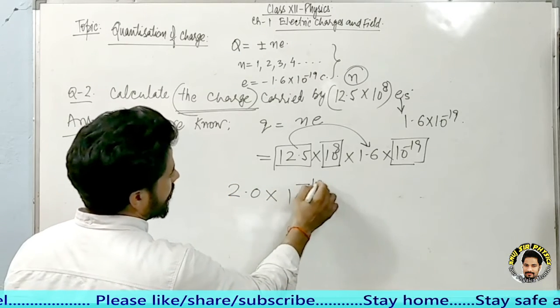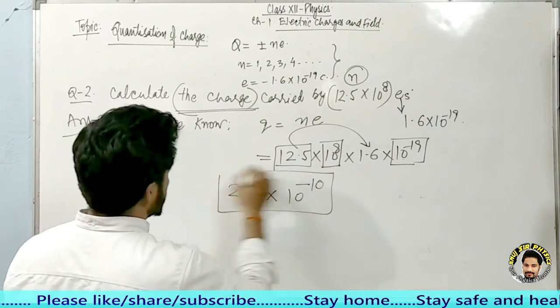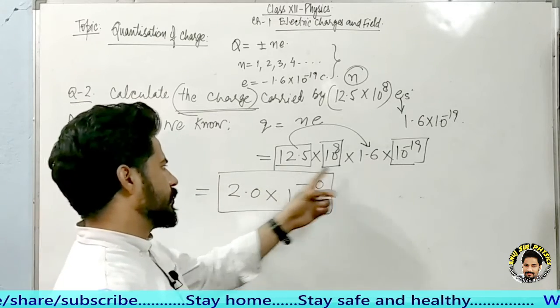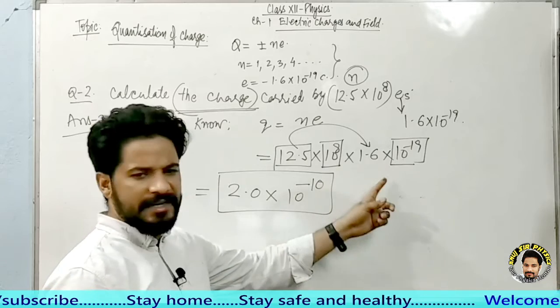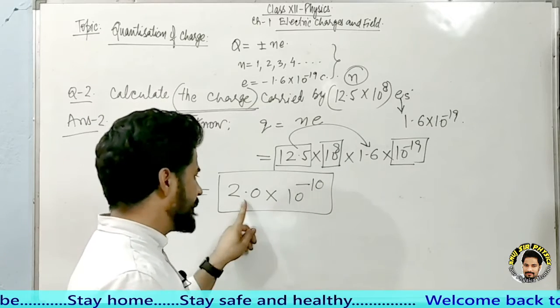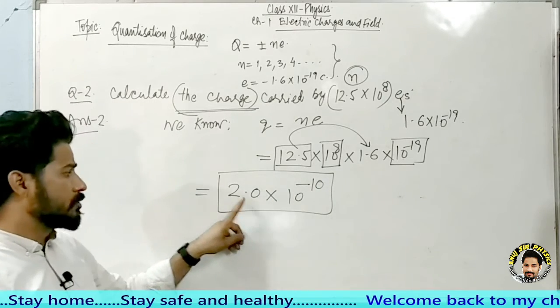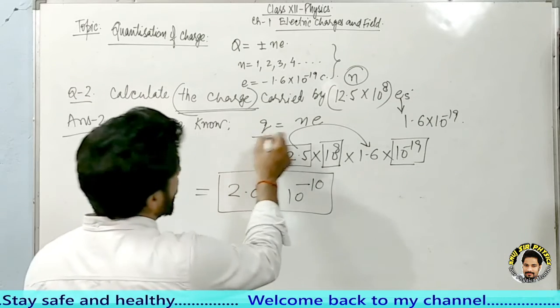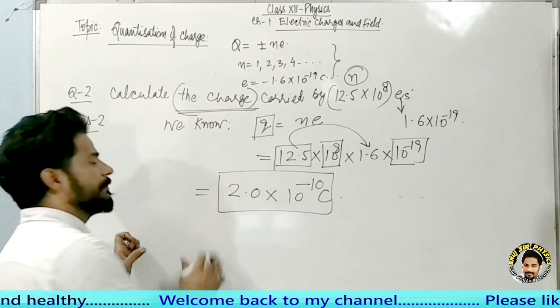into 10 to the power minus 10 coulombs. Powers have been adjusted here. When you multiply these together, it becomes 20 into 10 to the power of minus 11. When you put this in scientific notation, it becomes 2.0 into 10 to the power minus 10, and since charge is asked, the unit will be coulombs.